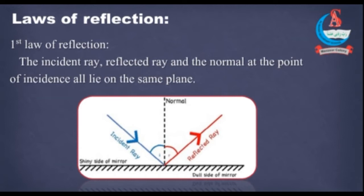Ab jho red ray jho mirror se takra kar vaapis ja rahi hai. And the normal, normal eek perpendicular line hai. Aap dheekh sakte hai, ke normal eek perpendicular line hai, jho mirror ki surface par mawajud hai.